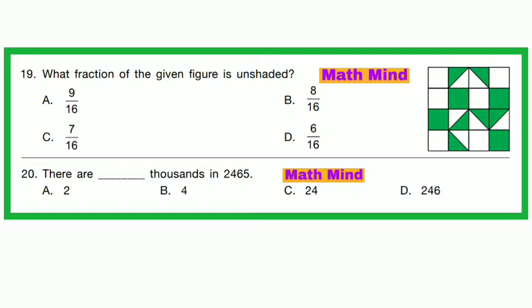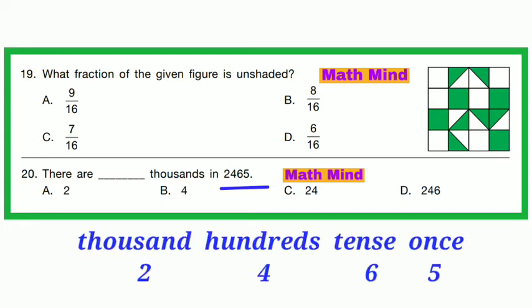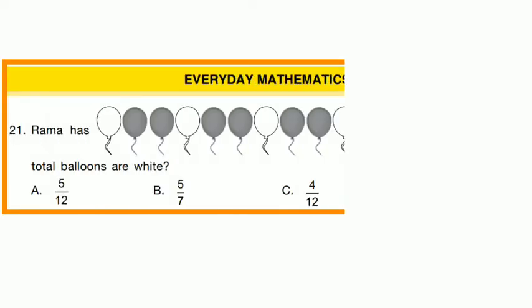Question No. 20: There are dash thousands in 2465. In 2465, the digit 2 is in the thousands place. So Option A is correct — there are 2 thousands.